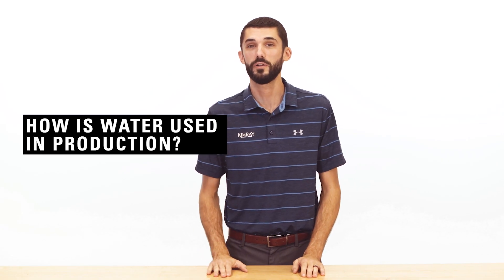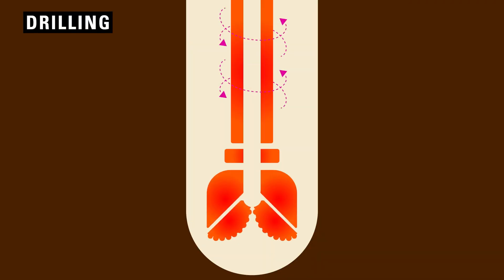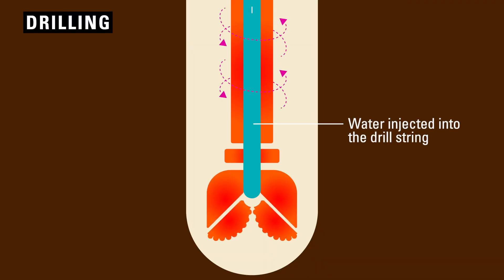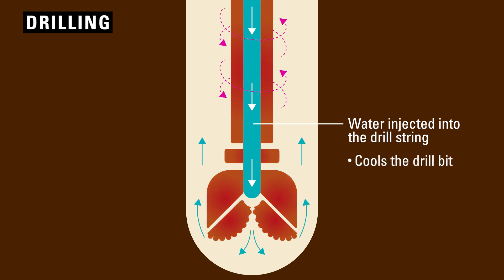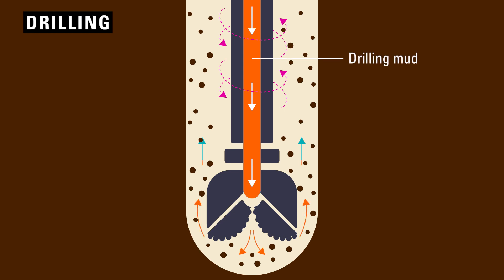So how is all this water used in oil and gas production? First, you need to drill a well. In the drilling process, water is injected into the drill string and used to cool the drill bit as it bores into the earth. It is also used to bring rock cuttings and other debris back up to the surface. This water is then referred to as drilling mud and can be reused for the drilling process.